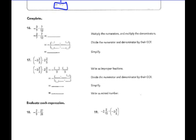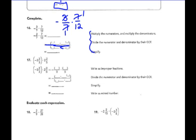Let me work in the margin here. For 3 sevenths times negative 7 twelfths — it's easy to see that 7 is common in that numerator and denominator, and 3 and 12 also have a 3 in common. 3 divided by 3 is 1, 12 divided by 3 is 4. Multiply across the numerator: 1 times 1 is 1. Don't forget that negative outside. 1 times 4 is 4. The product is negative 1 fourth.